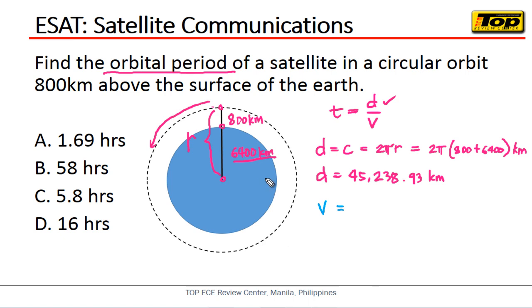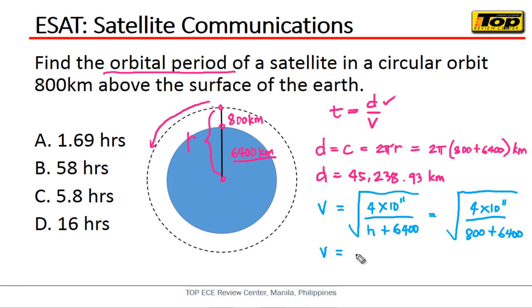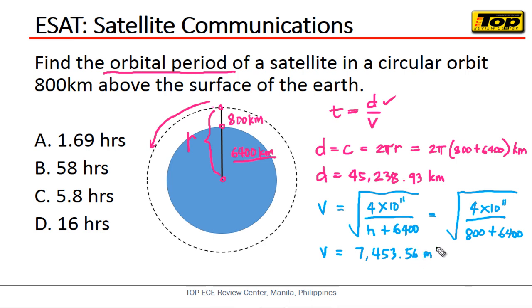The velocity formula is the square root of 4 × 10¹¹ divided by the orbital radius (height plus 6,400), and the unit is meters per second. Substituting: square root of 4 × 10¹¹ divided by (800 + 6,400). The orbital velocity works out to approximately 7,453.56 meters per second.